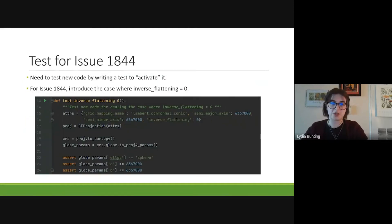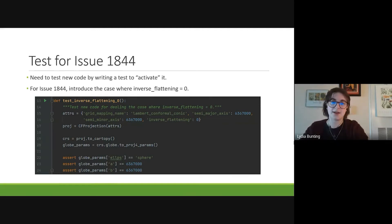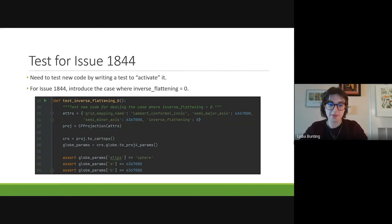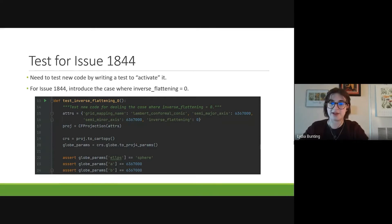For issue 1844, I had to write a test code to activate the new code I added — the case where inverse flattening is zero. I basically provided the attributes to establish the sphere and then added in the case where inverse flattening was zero, so it would activate that if statement and not pass on that inverse flattening value but instead interpret it as a reference point. This test did pass, which meant that the code written to address this issue was operating correctly.